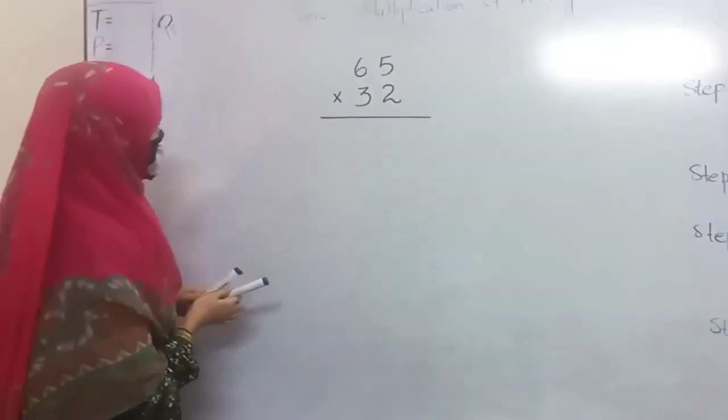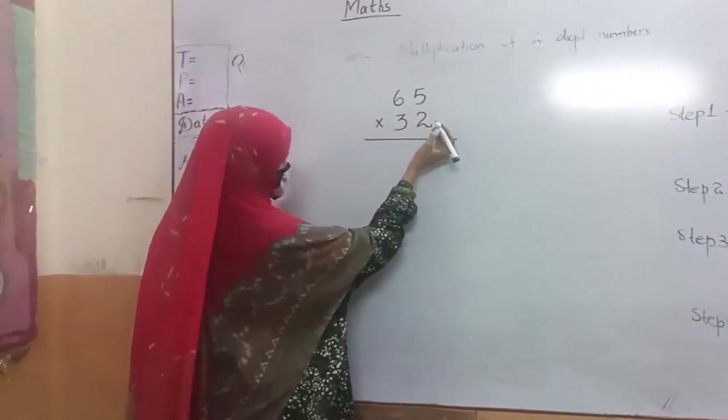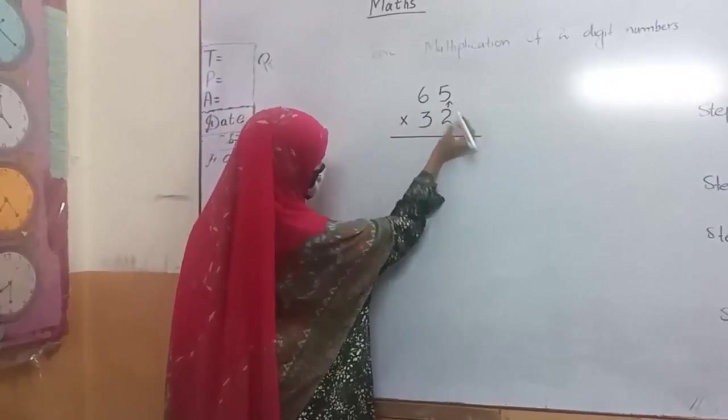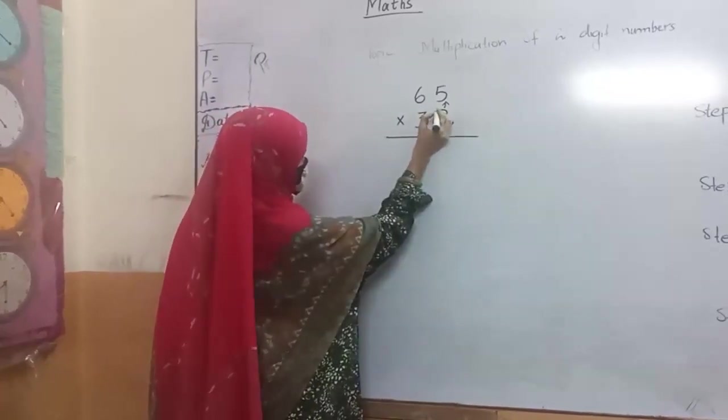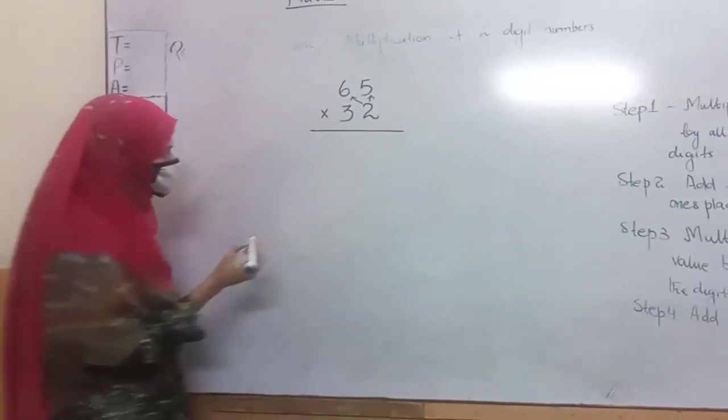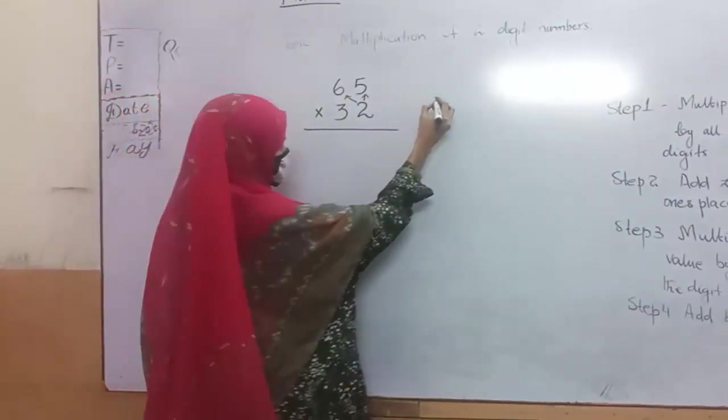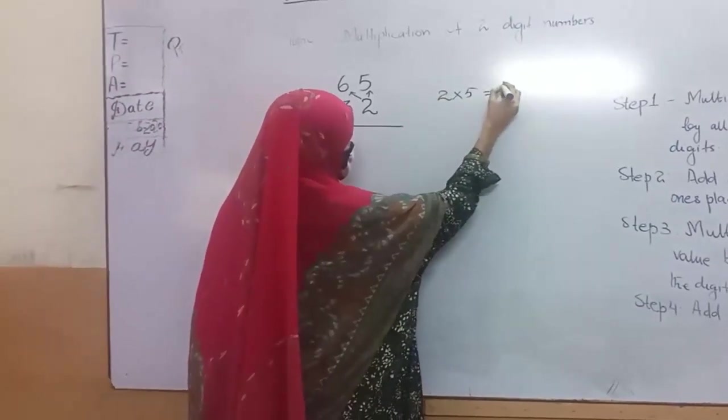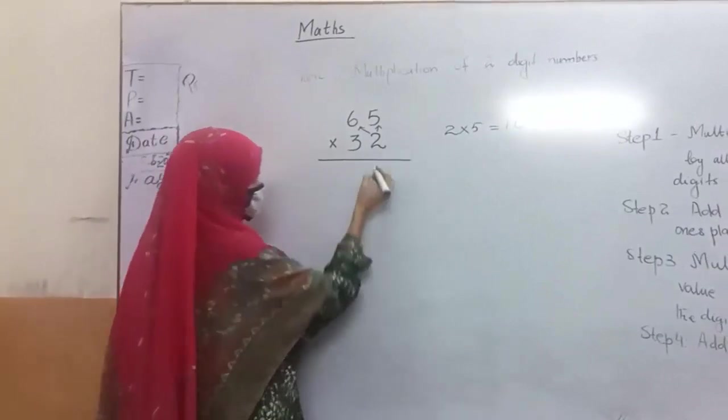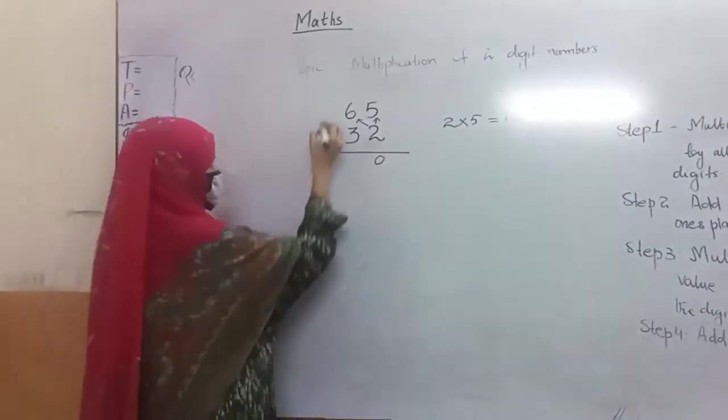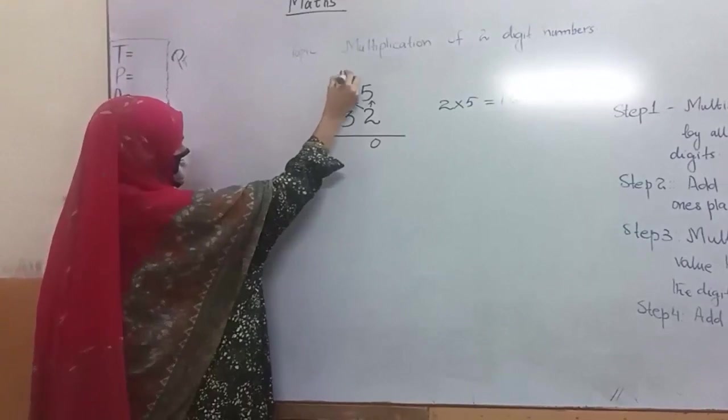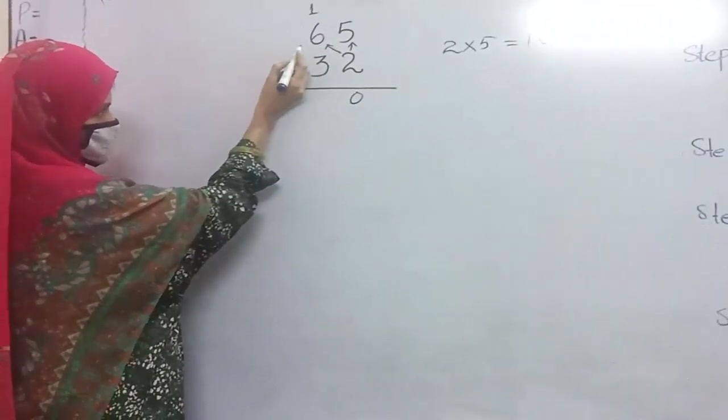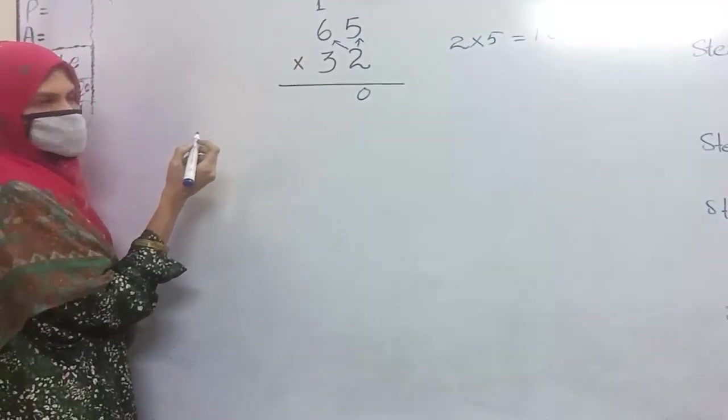Let's resolve. First we solve 2 multiplied by 5, then 2 multiplied by 6. We know that 2 multiplied by 5 equals 10. We write here 0 and 1 carry over on the top. 2 multiplied by 6 equals 12.